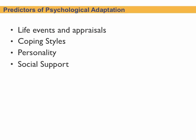Here we see the predictors of psychological adaptation, just as we saw the predictors of socio-cultural adaptation. These include life events and appraisals, coping styles, one's personality, and social support around you. Do you have good social support — friends, organizationally, your host culture — and what mechanisms are in place to help you adapt psychologically to the culture, the new language, and the different ways of doing things?